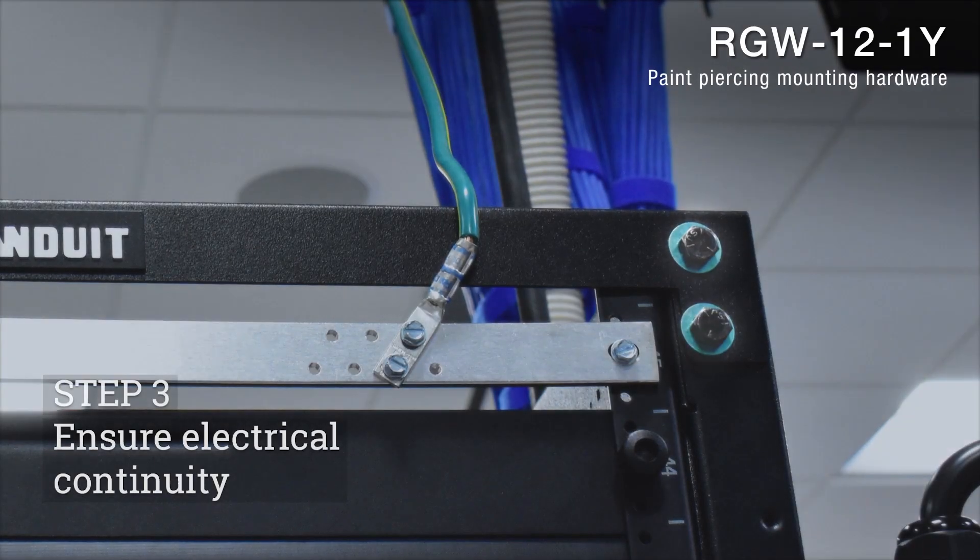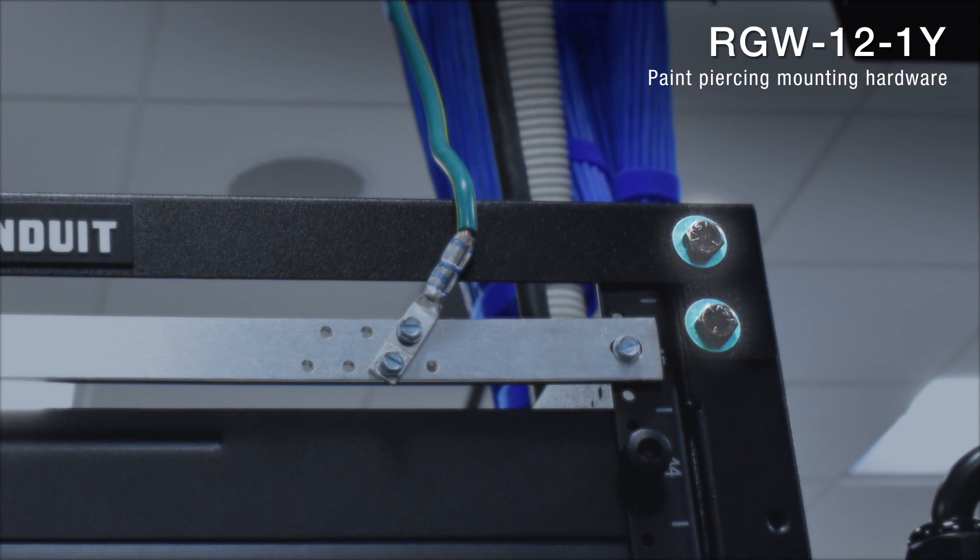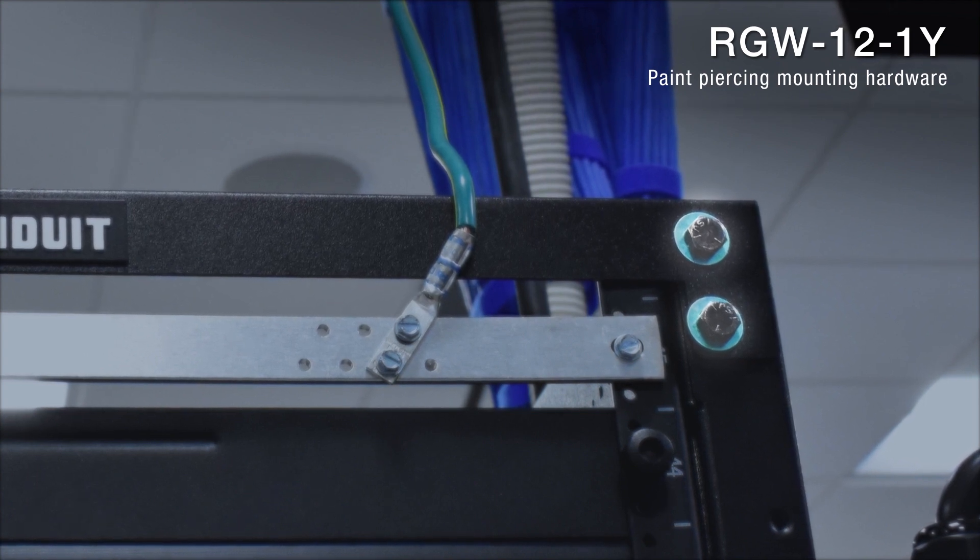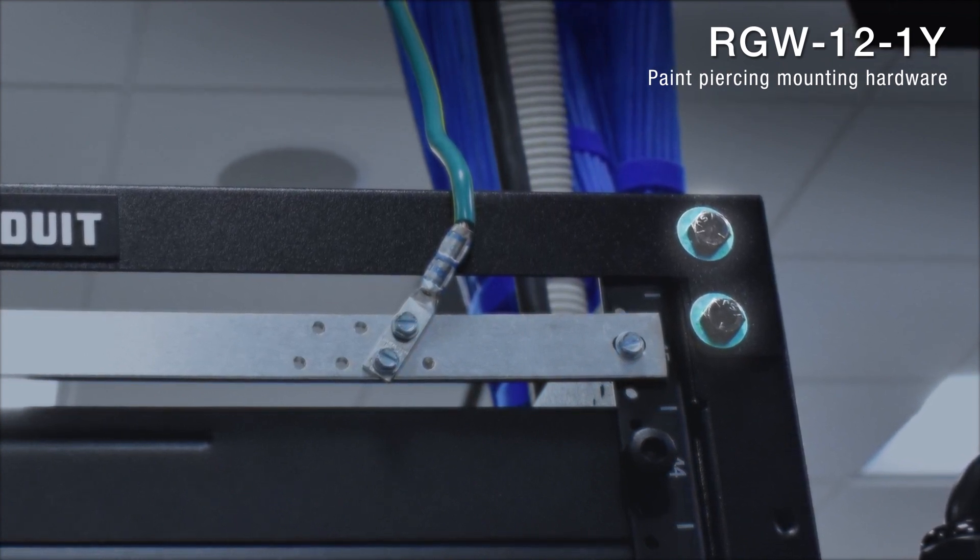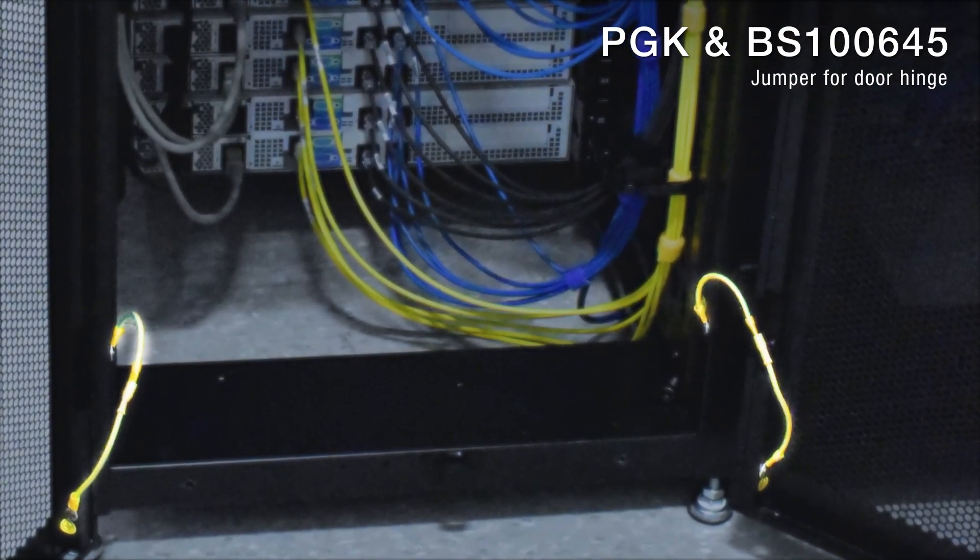Step three is to ensure that the cabinet or rack you are bonding to is electrically continuous. Even if there are signs of the frame being welded, you should always use paint piercing hardware to bond sections together to reduce resistance. Make sure any separate panel or door hinge is also connected with a jumper.